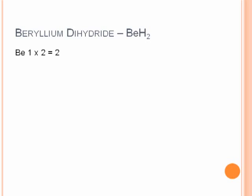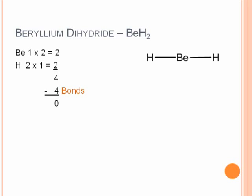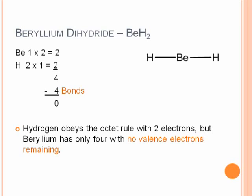Looking at beryllium dihydride: one beryllium times two valence electrons gives a contribution of two. Two hydrogens times one valence electron gives a total of two. Adding those up, we get four total valence electrons. Drawing in our skeleton, we draw our two bonds, which is four electrons, leaving zero valence electrons remaining. We evaluate the octet rule: hydrogen obeys it, but beryllium does not — there's no way to get eight electrons on beryllium. Since beryllium is happy with four, we'll leave the structure as is. That is the correct structure for beryllium dihydride.